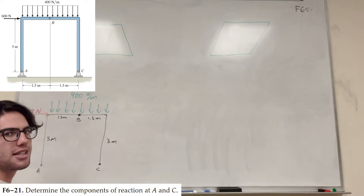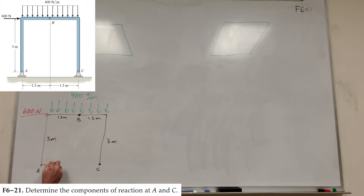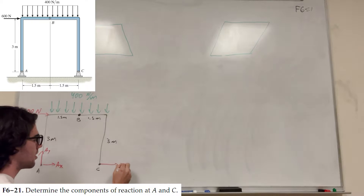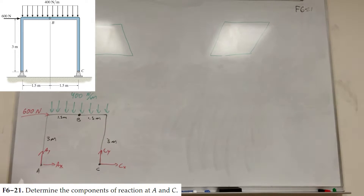So A and C are both pins. If they're both pins, then there's going to be two forces at each. So we're going to label A of X, A of Y, and then C of X and C of Y. So now we have four unknowns. That's a lot of unknowns.